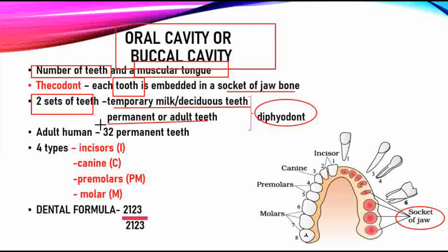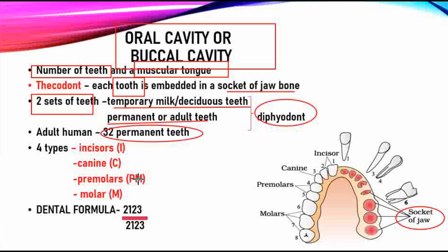There are four types of teeth: incisors (I), canines (C), premolars, and molars. In the picture, the incisors are at the front, followed by the canines, then premolars, and finally the molars at the back. These are the four types of teeth.